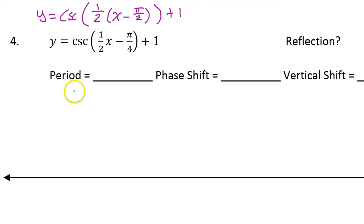The first thing I like to do is come up with a period. The period is always the normal period divided by the B value. For cosecant and sine, that's going to be 2 pi. So the period is 2 pi divided by 1 half, which means you multiply by the reciprocal. That's 2 pi times 2, so the period is 4 pi.